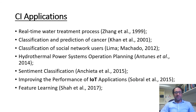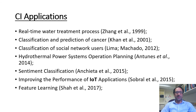Here are some of the applications of computational intelligence. Computational intelligence has been used for real-time water treatment processes, classification and prediction of cancer, classification of social network users, hydrothermal power systems operation planning, sentiment classification, improving the performance of IoT applications, and recently for feature learning.